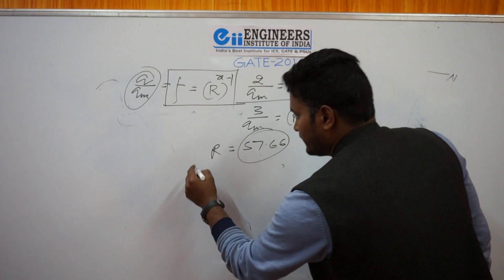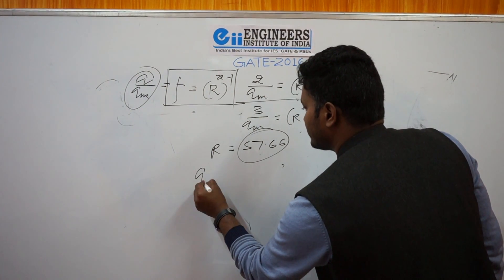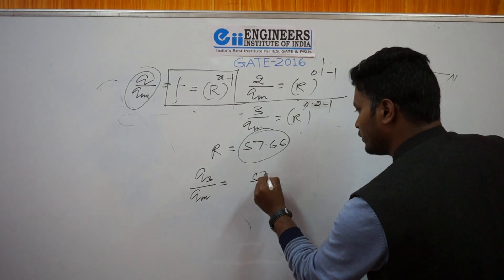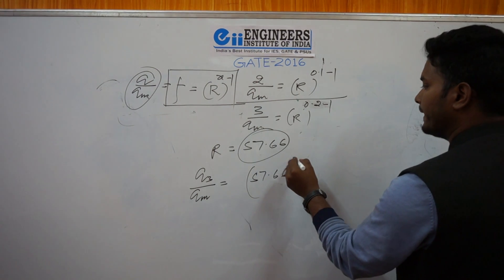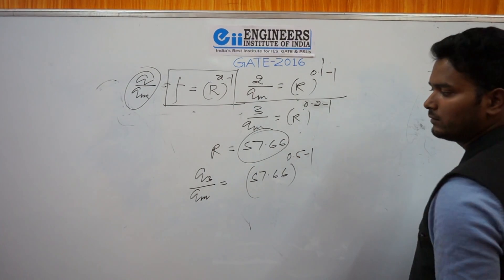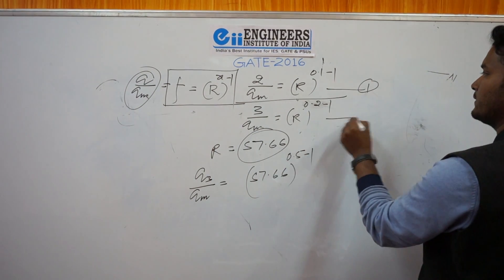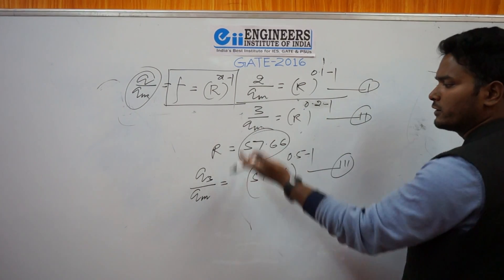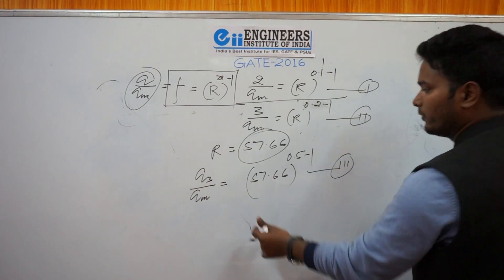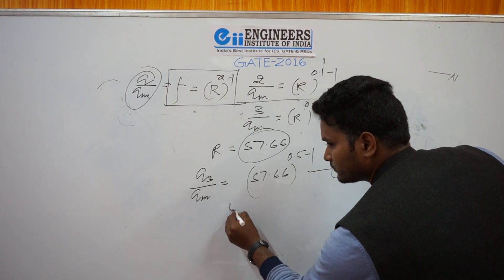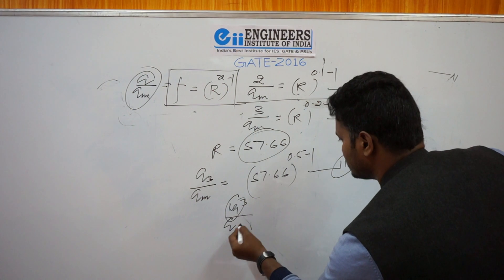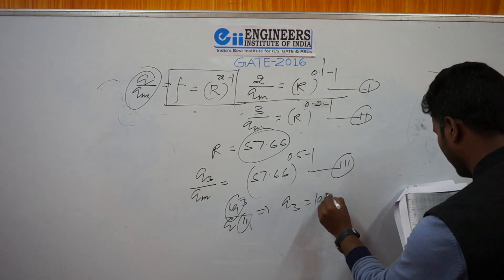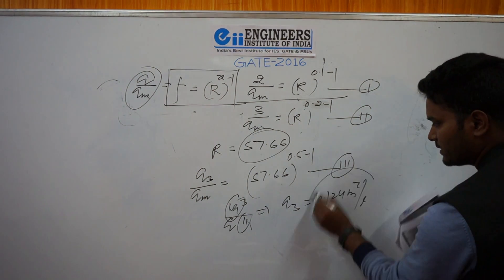For the third case, q3 upon q_max equals r to the power (x3 minus 1), with r now known as 57.66 and x3 equals 0.5. Dividing this third equation by either the first or second equation, you can solve for q3. Dividing equation three by equation two gives the value of q3 equal to 10.124 meter cube per second. This is the answer.